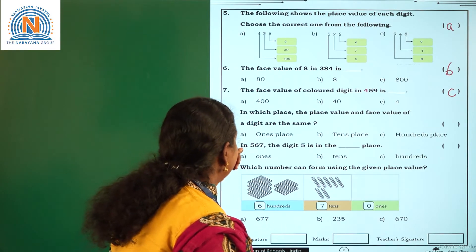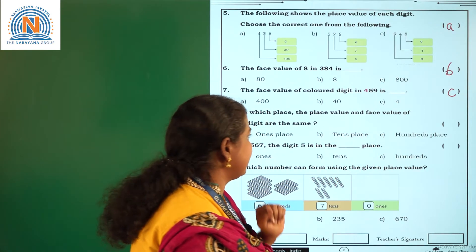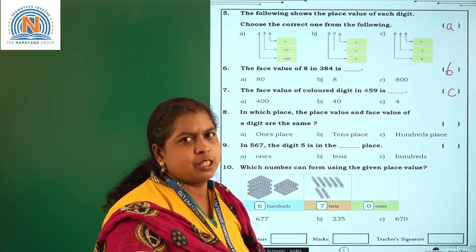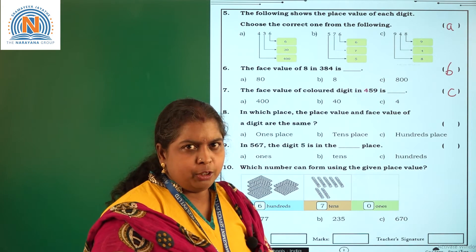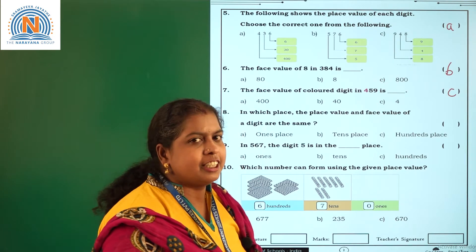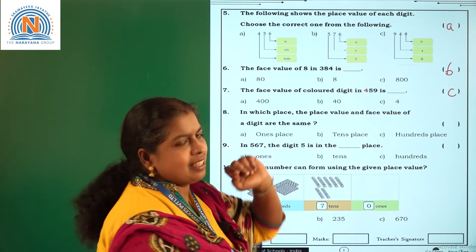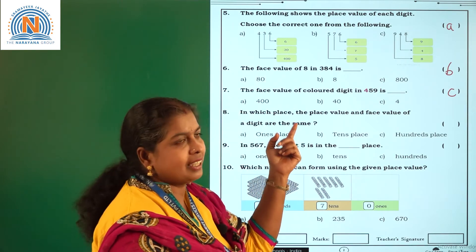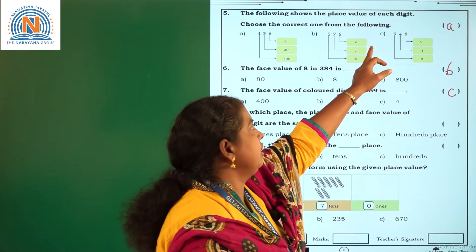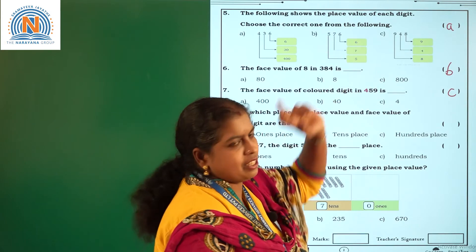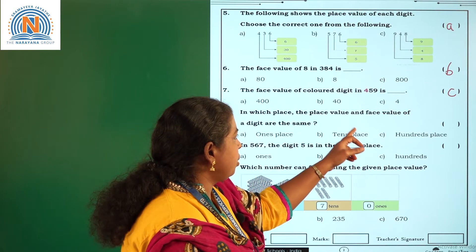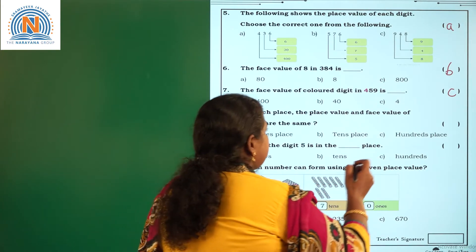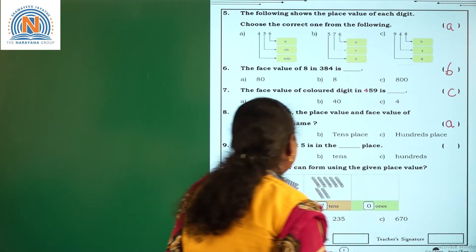In which place are the place value and face value of a digit the same? If you observe the place value chart — 1's place, 10's place, 100's place — you will get the same value for place value and face value for a digit which is in the 1's place. For example, in 436, the place value of 6 in the 1's place is 6, and the face value of 6 is also 6. So the place value and face value are the same in the 1's place. The correct option is A.